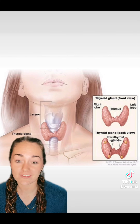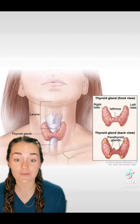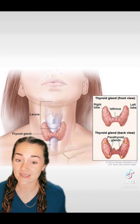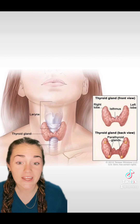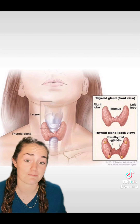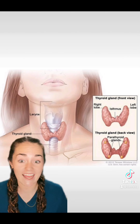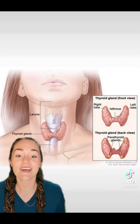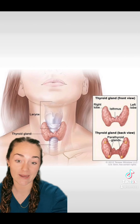Your thyroid is a little butterfly-shaped gland that controls a lot of your hormones. Your hormones are going to control almost everything in your body: your energy levels, your metabolism, your brain function, your bone development, your heart rate. Everything is controlled by hormones. So the thyroid is a super, super important gland in your body.